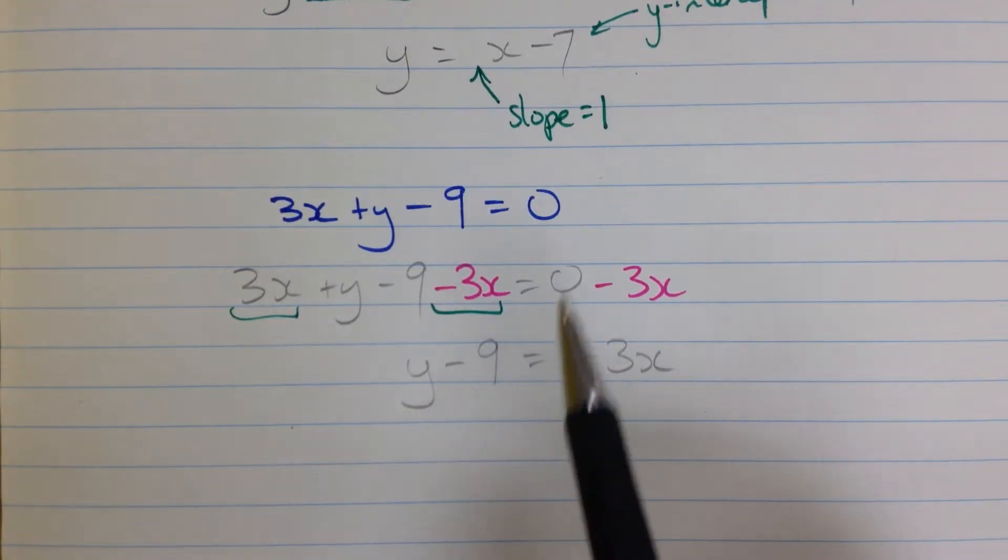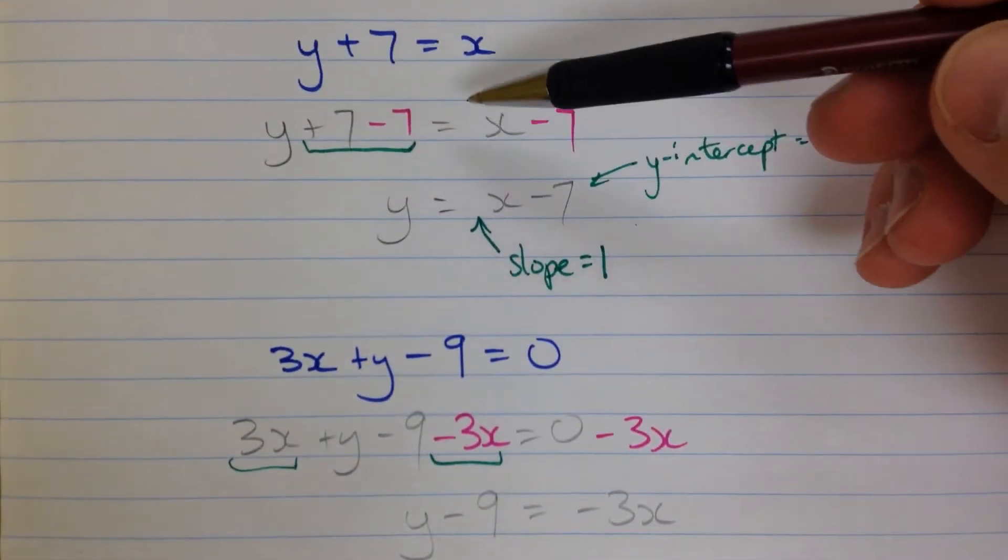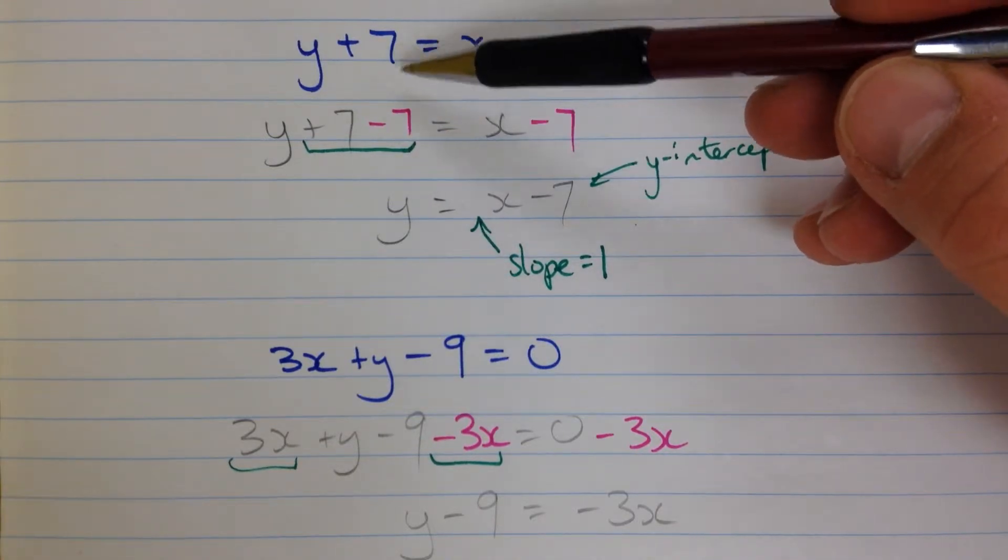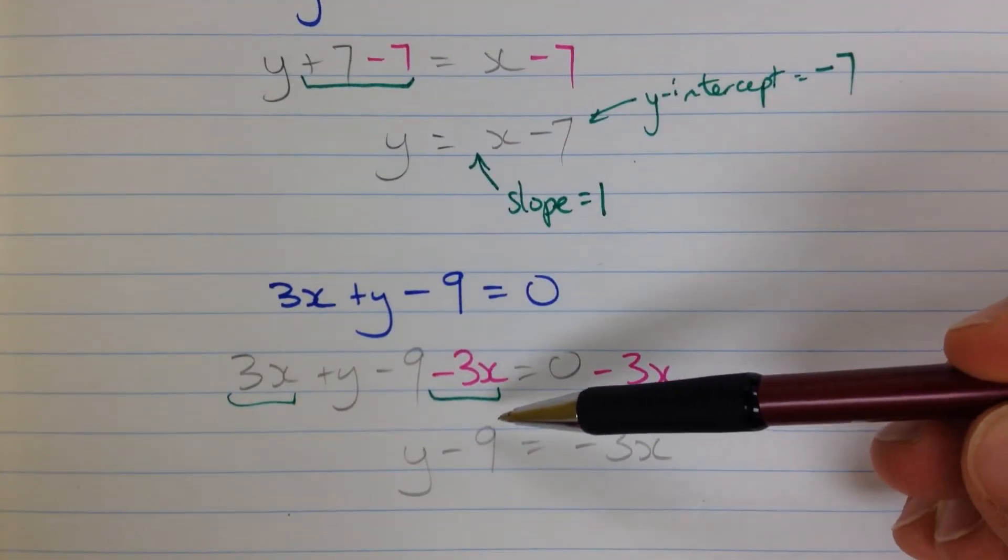While we're getting close, we almost have y by itself. Now this is very much like what we did up here. Here we had a plus 7. Now we've got a minus 9 to get rid of.